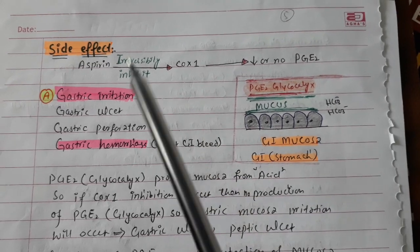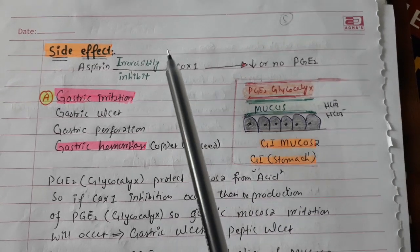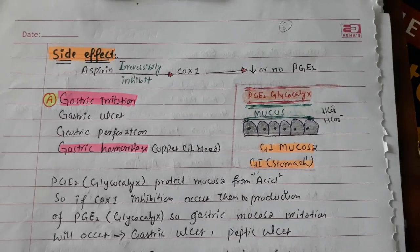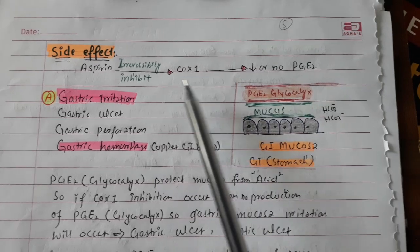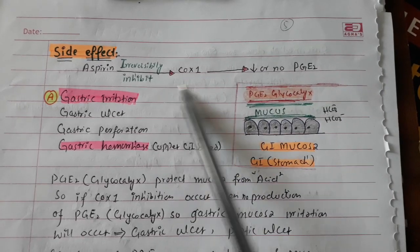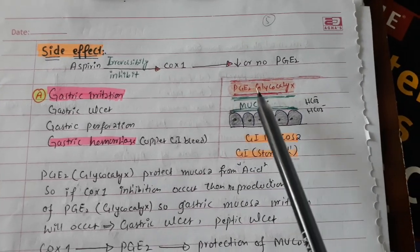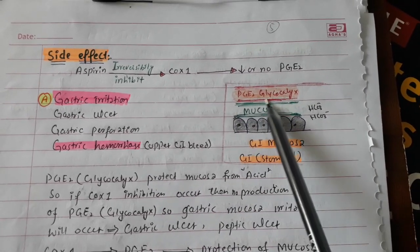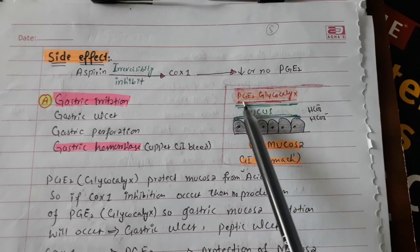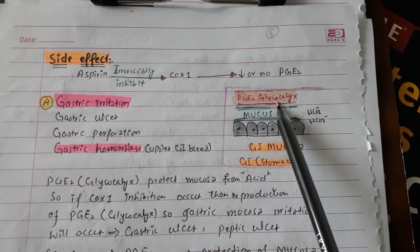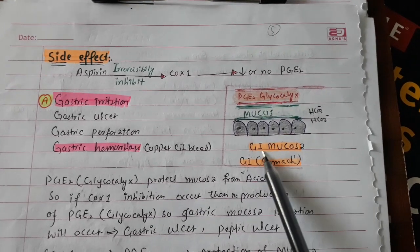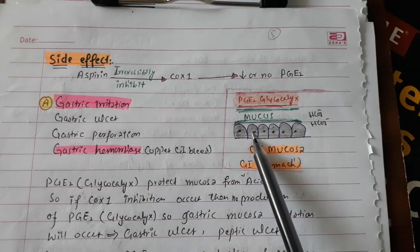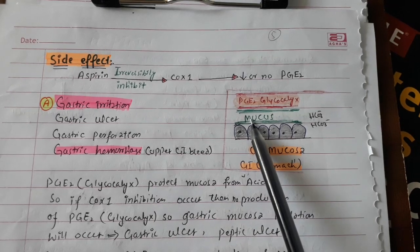Aspirin irreversibly inhibits the COX enzyme. If it inhibits COX-1, it will decrease the production of prostaglandin E2, which is also called glycocalyx. The gastric mucosa is protected by mucus.